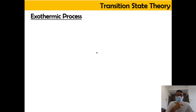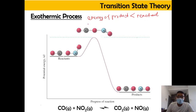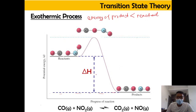Now let's look at the exothermic process. For an exothermic process, the energy of the product is less than that of the reactant. For endothermic it is the other way around. In an exothermic process, the energy of the product is lower than the reactant, giving a delta H that is negative — because product energy minus reactant energy is negative. For example, if product is 10 and reactant is 100, then 10 minus 100 equals negative 90.